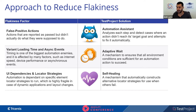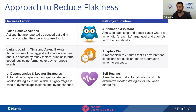Self-Healing is a mechanism that automatically constructs multiple alternative locators for a single element. This allows us to find an element using multiple methods instead of just one, so our automation won't break if an element is moved or its name is changed — we have multiple ways to find it and heal the automation.